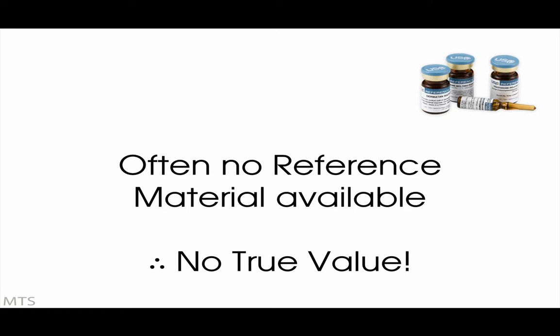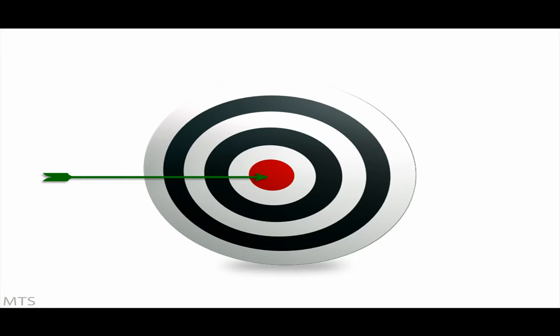The purpose of the accuracy investigation is to show that the value determined by the test is close to the true value, shown here as how close the arrow is to the centre of the target. If you don't know the true value, then you can't assert that the test method is accurate.